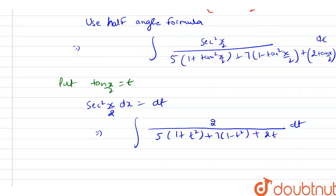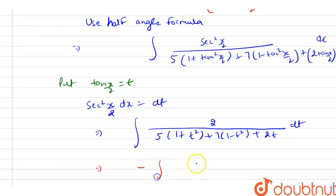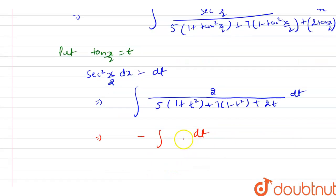After solving further, expanding the denominator gives 5 + 5t² + 7 - 7t² + 2t = 12 + 2t - 2t². This simplifies to minus of the integration of dt divided by (t² - t - 6).